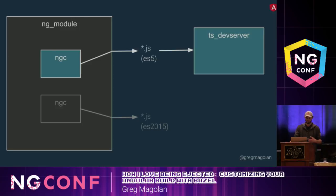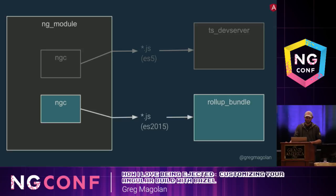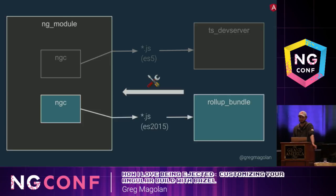A downstream rule may depend only on a subset of these outputs. The ts-dev-server rule, for example, which runs a dev server and serves a bundle of its input files concatenated, will just use the ES5 outputs of the ng-module rule, while the rollup-under rule — which generates a production bundle using rollup and uglify — will use the ES2015 outputs. In this way, downstream rules can configure upstream rules for you, so you don't need to configure what outputs ng-module will generate, and you don't need to worry about which outputs the downstream rules will use.